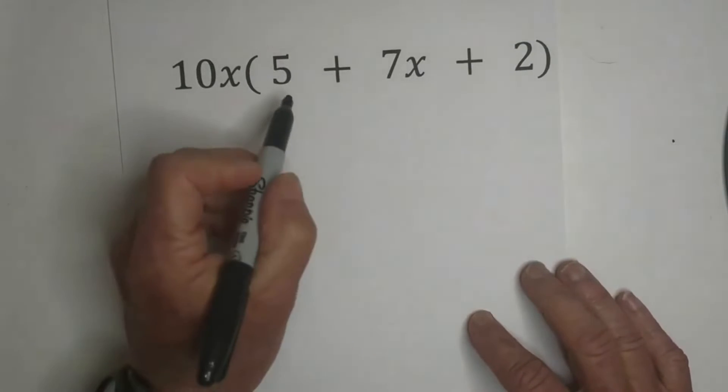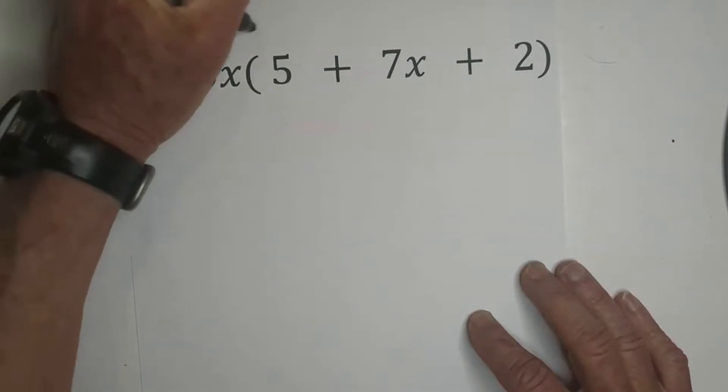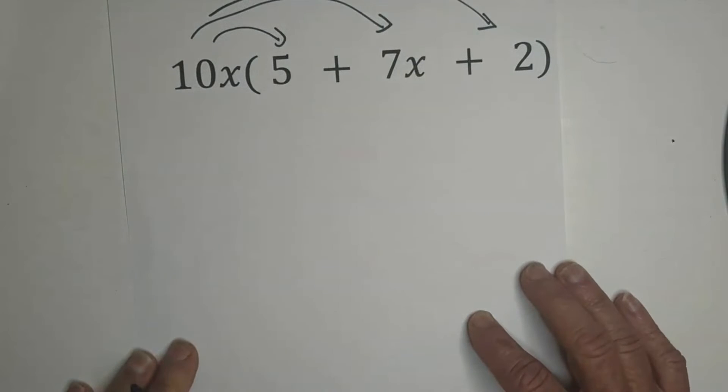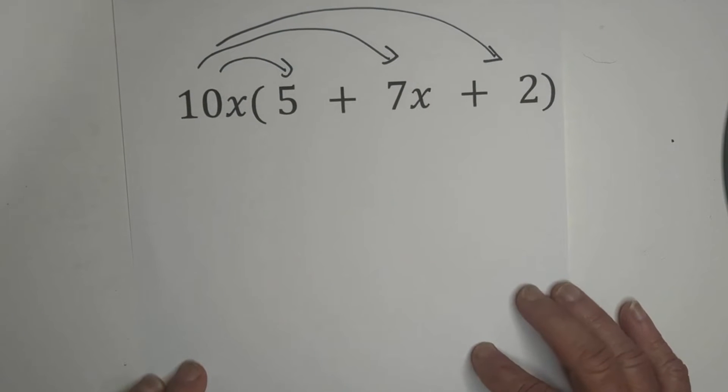Now let's take a look at this one. Again, we have the same thing. We're going to distribute the 10x.